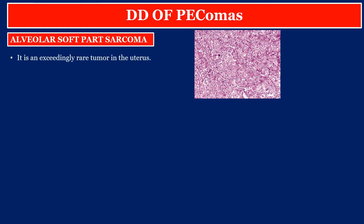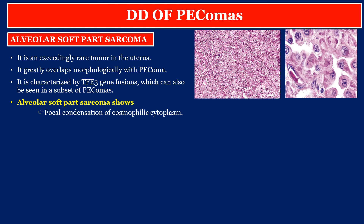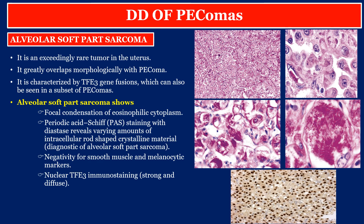Alveolar soft part sarcoma is an exceedingly rare tumor in the uterus. It greatly overlaps morphologically with PEComa. It is characterized by TFE3 gene fusion, which can also be seen in a subset of PEComas. Alveolar soft part sarcoma shows focal condensation of eosinophilic cytoplasm, and periodic acid-Schiff staining with diastase reveals varying amounts of intracellular rod-shaped crystalline material, which is diagnostic. It shows negativity for smooth muscle and melanocytic markers, nuclear TFE3 immunostaining strong and diffuse, and classic ASPSCR1-TFE3 fusion.